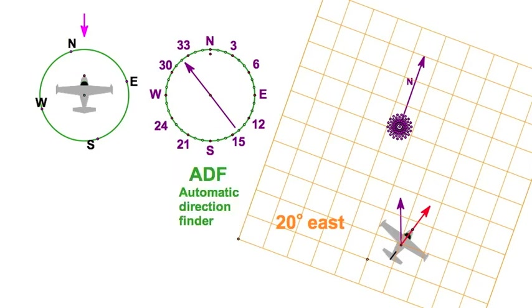The ADF is called the automatic direction finder. All it does is point at the station. Now that station could be a commercial radio station, it could be a ham radio operator, but for our purposes we actually have NDB stations which are broadcasting specifically for aviation traffic and you will see them.